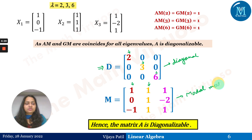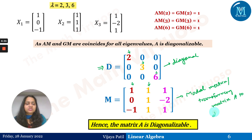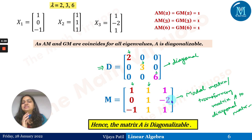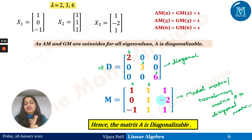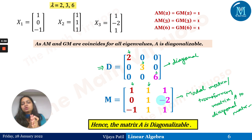M is known as the modal matrix, also called the transforming matrix — it transforms A to the diagonal matrix D. So D and M together represent the diagonalization of A. We found the eigenvalues using the characteristic equation λ³ − ..., then found the eigenvectors corresponding to each eigenvalue, and wrapped them up by writing D and M separately — that is the diagonalization of A.